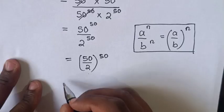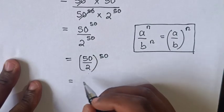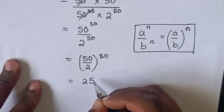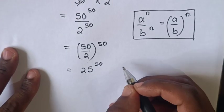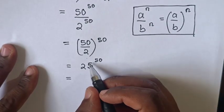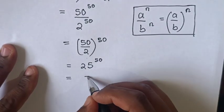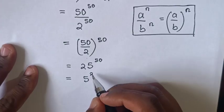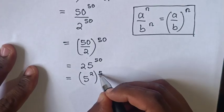This equals 25^50. Then, since 25 is the same as 5^2, it becomes (5^2)^50.